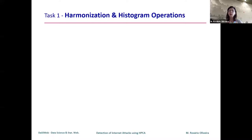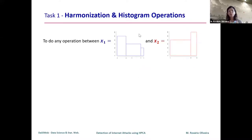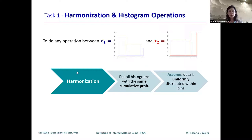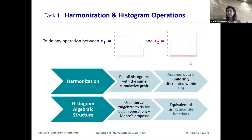The first task is how to do operations with histograms. If we have two different histograms, the challenge is how to sum them. The idea is to do some initial preprocessing called harmonization, where we adjust the histograms such that each bin has the same probability. For each pair of bins with the same probability, we combine information doing operations interval by interval.